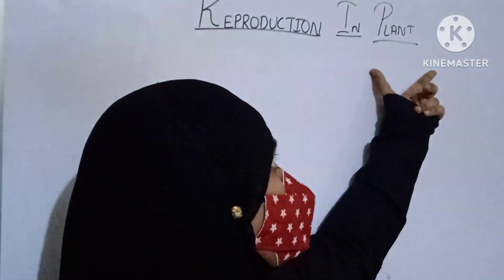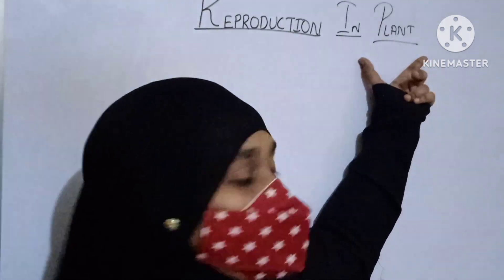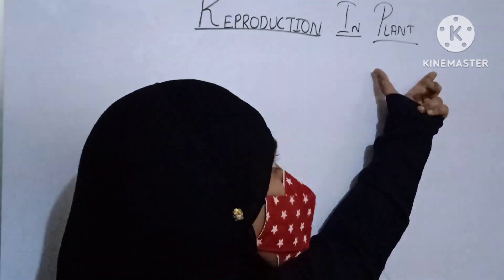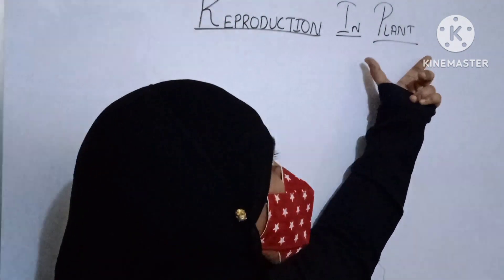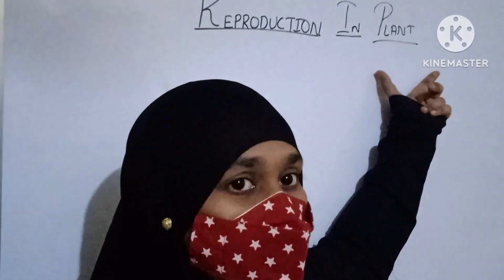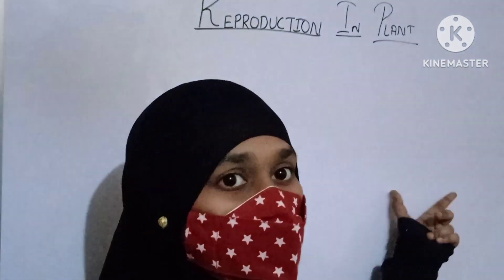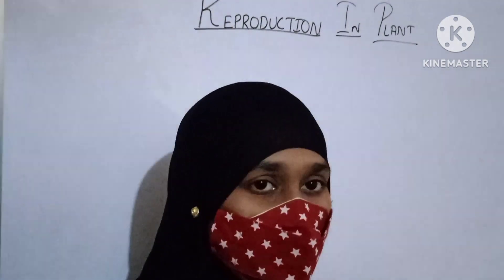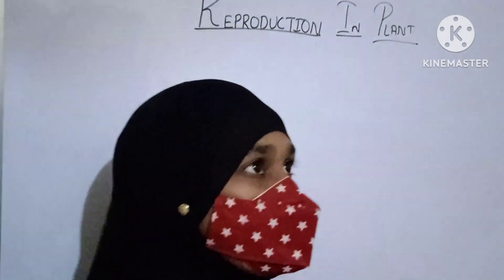The plant has the characteristic of reproduction. It reproduces a new plant of its own kind. For example, you can see the tomato plant producing its new tomato plant.